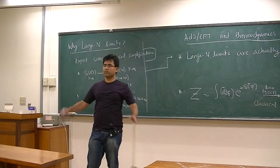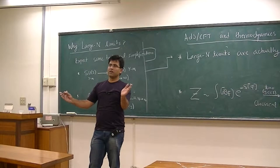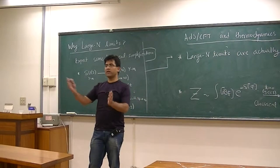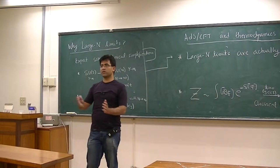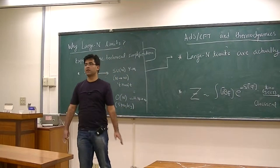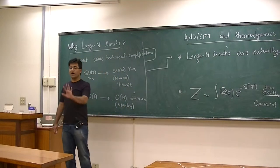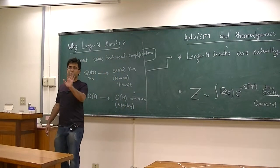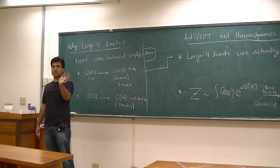What you're saying is that in taking the large N limit, maybe there is some non-analyticity — non-smoothness. That's one point. I don't know the general answer; maybe there is someone else who knows.